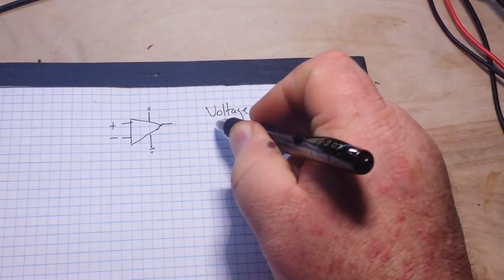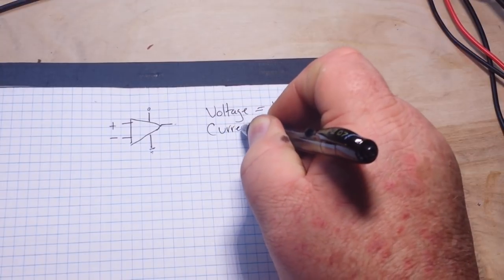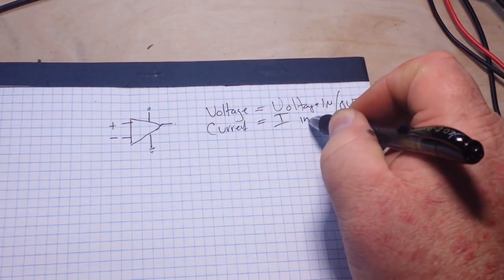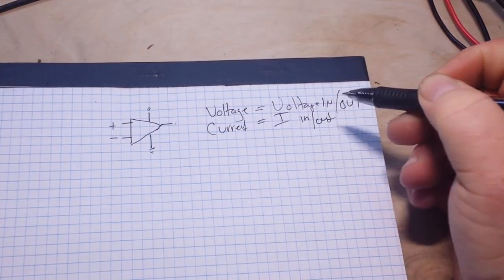You have four possibilities for our amplification. We have voltage, which is voltage in and out. We have current, which I'm just going to use the symbol I in and out.